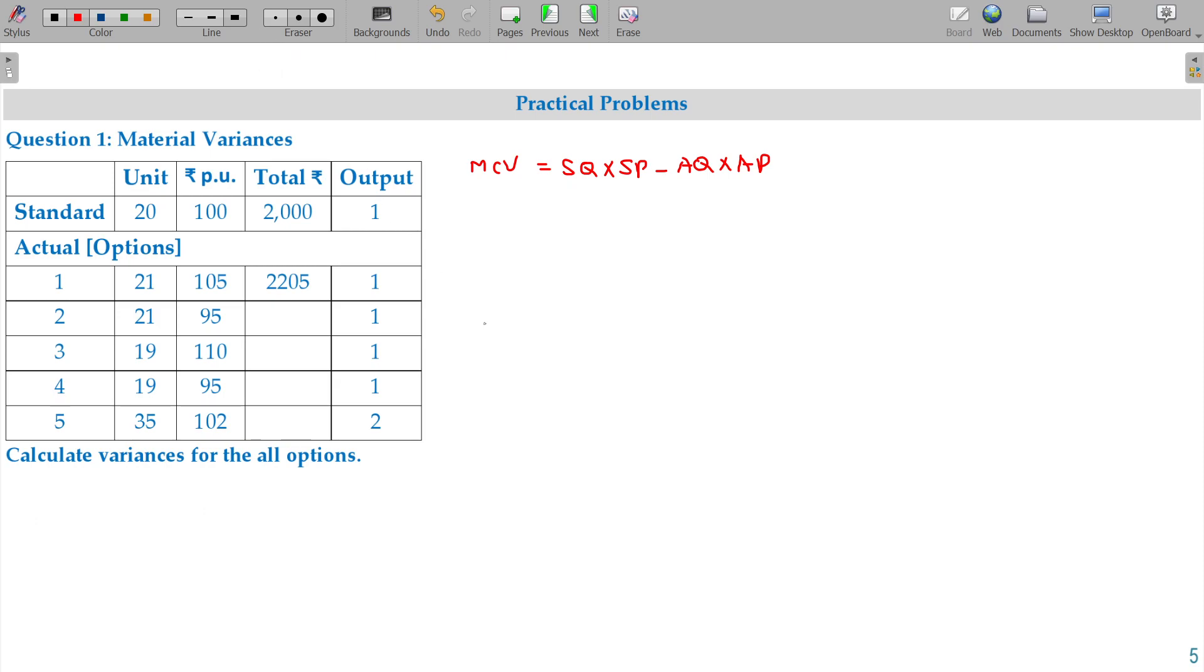And then, material price variance and quantity variance. Material cost variance is equivalent to standard quantity into standard price minus actual quantity into actual price.